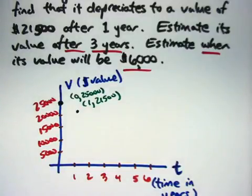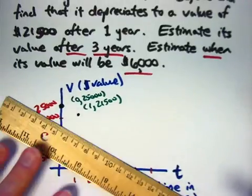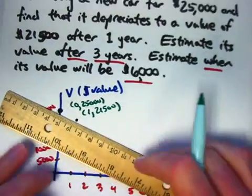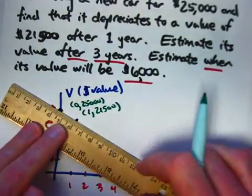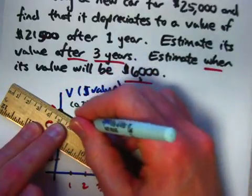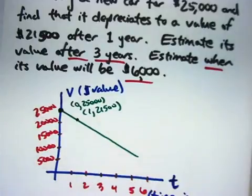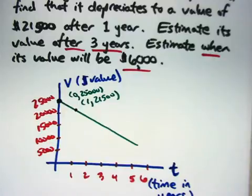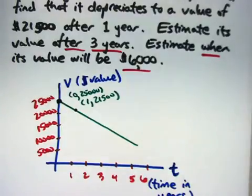Now what do I do? Well, what's typically done here, perhaps most typically, is to connect these dots with a straight line. It's certainly the simplest thing to do, like that, and to make the assumption that this is an accurate model for the value over time, for the value as a function of time.